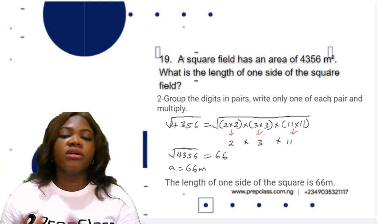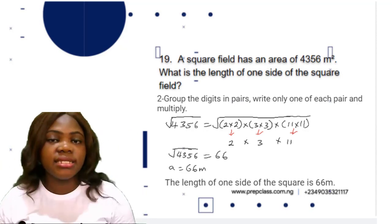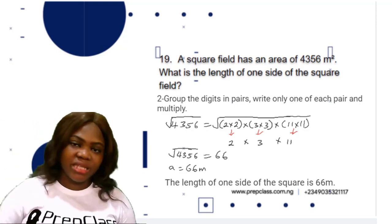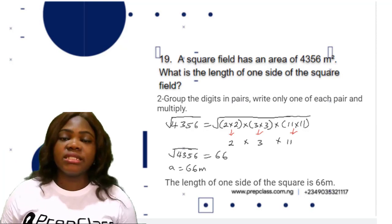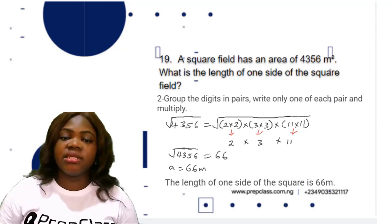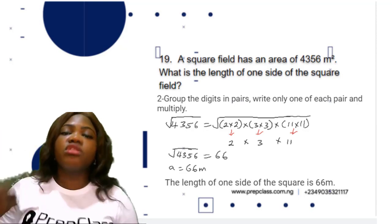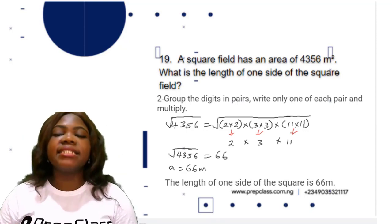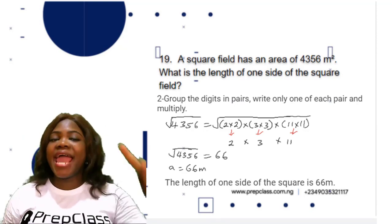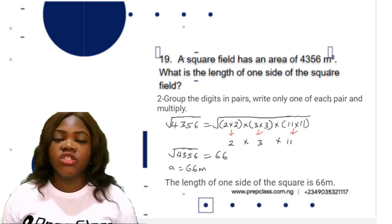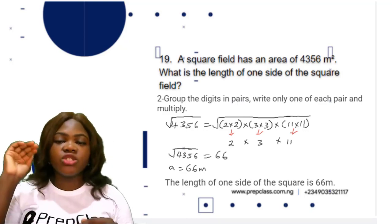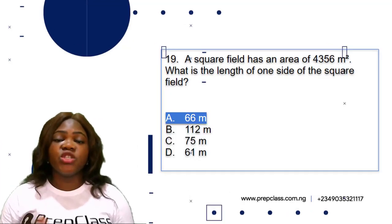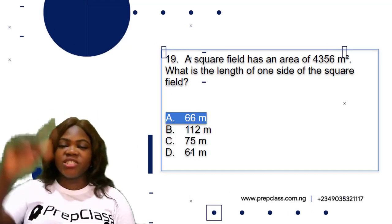Multiply 2 × 3 × 11 = 66. So the square root of 4,356 is 66. To verify: 66 × 66 = 4,356. Therefore a = 66 meters, which is the length of one side of the square field. The correct option is option A: 66 meters. Now the final question, question 20.